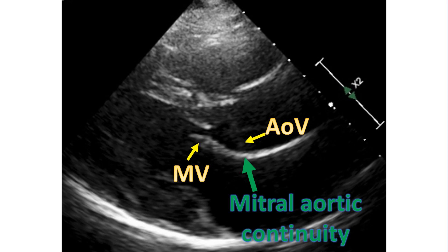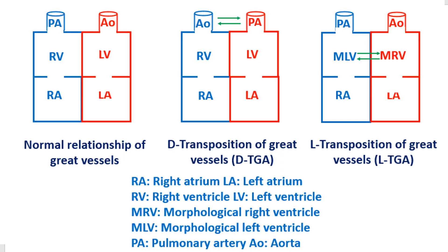Mitral-aortic continuity is a fibrous continuity between the non-coronary aortic cusp and the base of the anterior mitral leaflet. Atrioventricular concordance is assessed next. When the morphological right atrium and left atrium connect to the corresponding morphological ventricles, it is known as atrioventricular concordance. The reverse pattern is known as atrioventricular discordance.